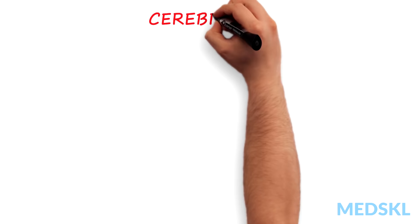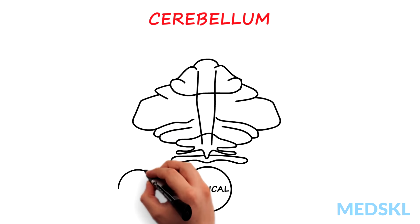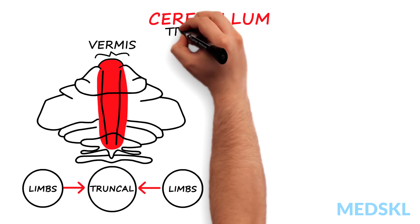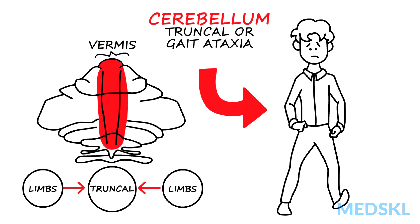Like the cerebrum, the cerebellum is organized in a somatotopic distribution with the trunk control centrally and the limbs more laterally. The midline structure is the vermis. Lesions affecting the area just lateral to and including the vermis result in truncal or gait ataxia.